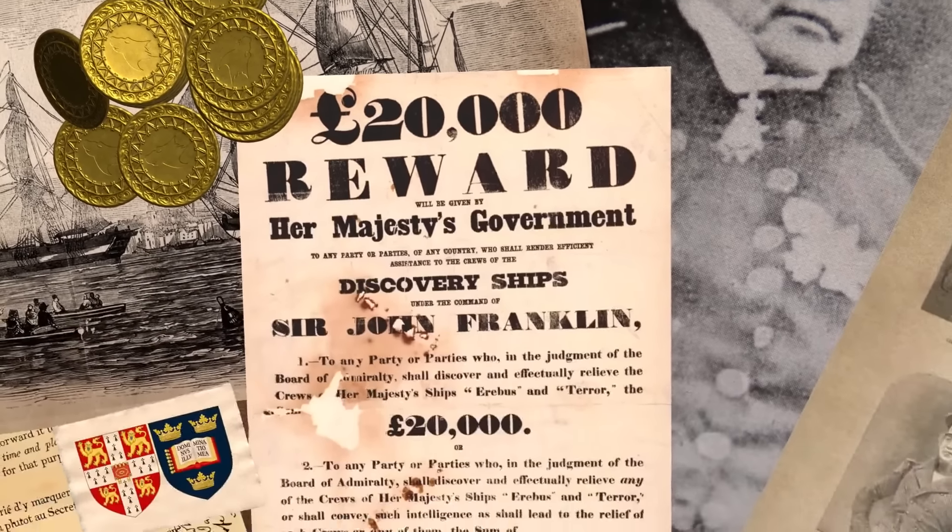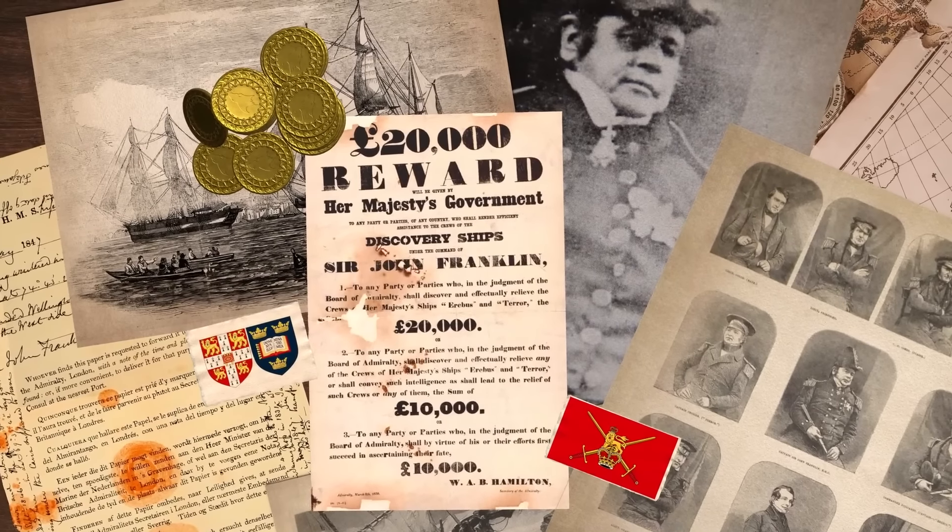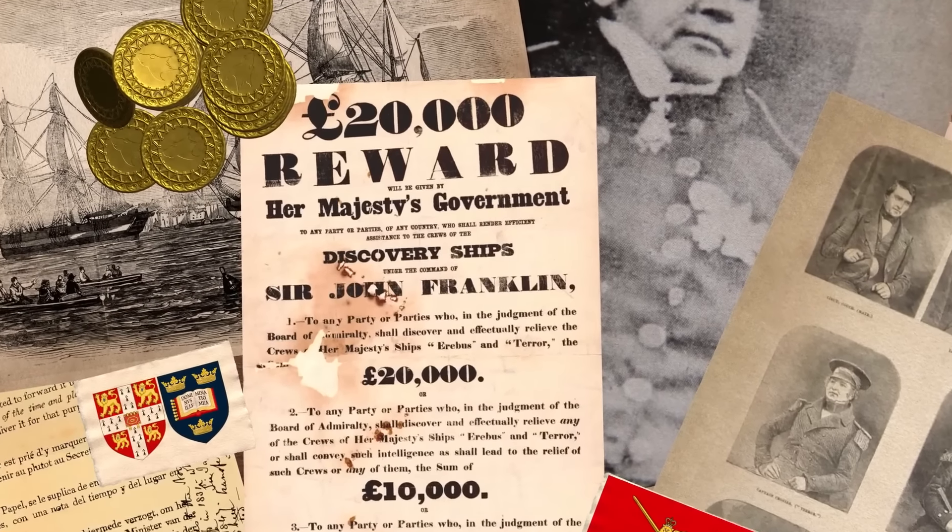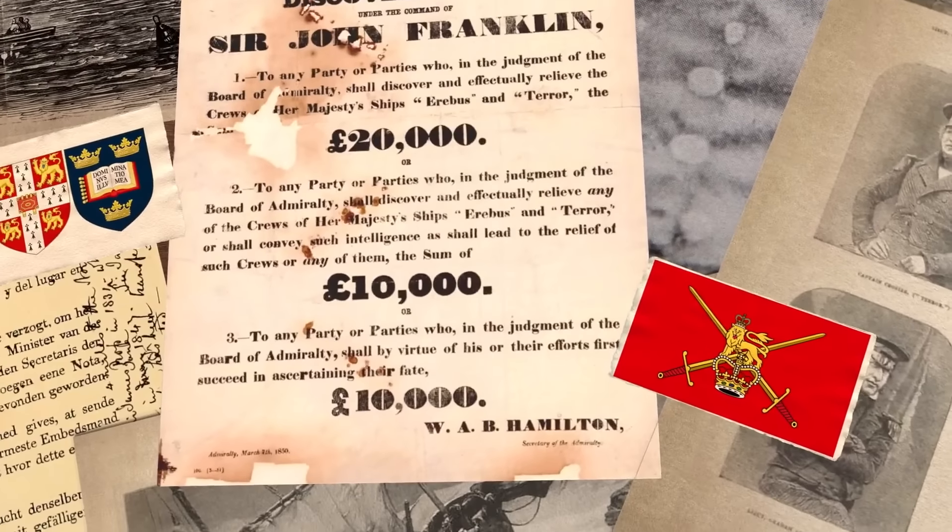At that time, high-ranking government officials, doctors, Oxbridge teachers, and lawyers received about £1,000 per year at the beginning of their careers, and renting a two-room apartment cost about £80 a year.